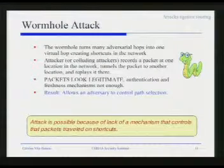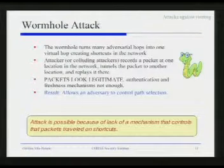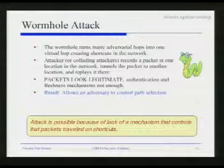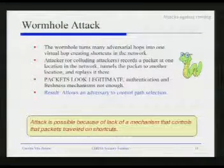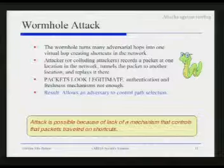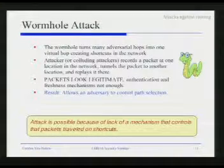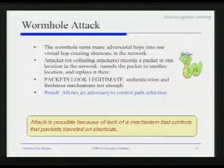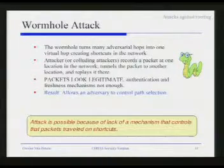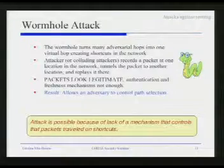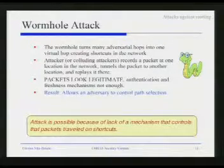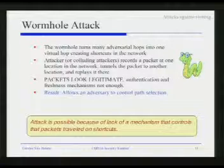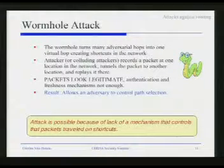There are some other attacks that are quite specific to wireless and are more difficult to deal with. One of them is called the wormhole attack. The idea is that an adversary establishes a tunnel — a wormhole — using at least two compromised nodes, and tunnels packets through this connection much faster than if the packets traveled normally through the network.